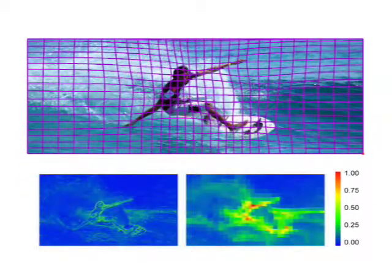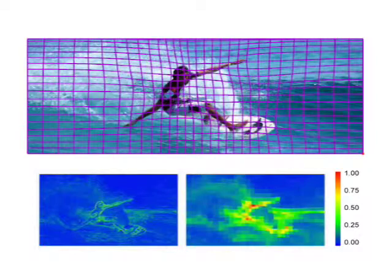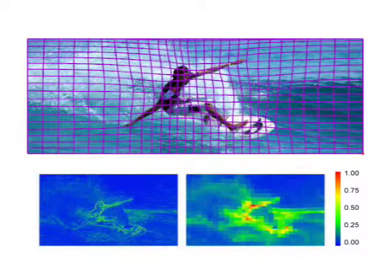In this example, our system automatically identifies the surfer as an important feature. The left image shows the pixel significance and the right image shows the quad face significance. Red means important and blue means trivial. Notice that the quads covering the surfer are rescaled uniformly to preserve their original aspect ratios, while the sea and water splashes are squeezed or squashed to satisfy the new global aspect ratio.